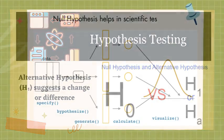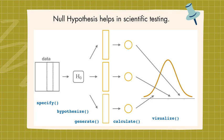By starting with the null hypothesis, we can use data to determine if there is enough evidence to support the alternative hypothesis.